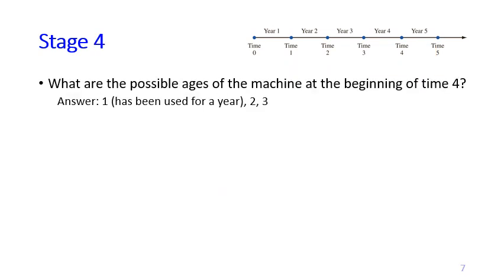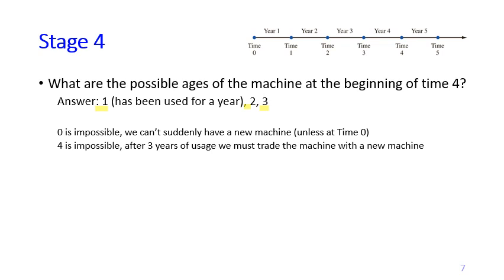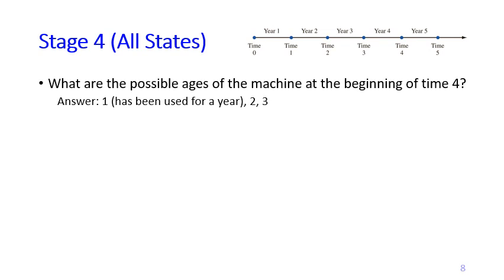Now let's move one step backward to time four. The state is the age of the machine, so we think about what are the possible ages at the beginning of time four. The answer is one, two, or three. Zero is impossible because we can't suddenly have a new machine unless it is time zero. Four is also impossible because after three years of using the machine, we must replace it — so at the beginning of any time point we cannot have a machine that is four years old.